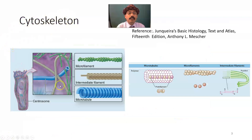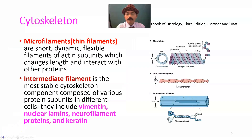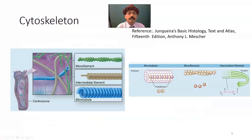Inside the cell we can see the microfilaments, intermediate filaments, and microtubules. The intermediate filament is more stable. It has different components — vimentin, nuclear laminin, neurofilaments, and keratin — which determine the type of intermediate filament. We can also see the protofilament as a component of microtubules, along with microfilaments and intermediate filaments.